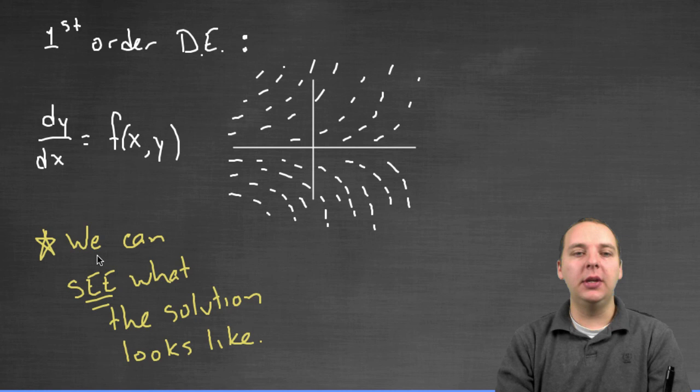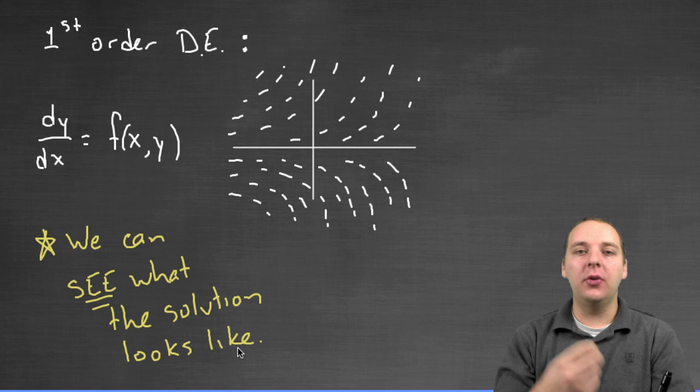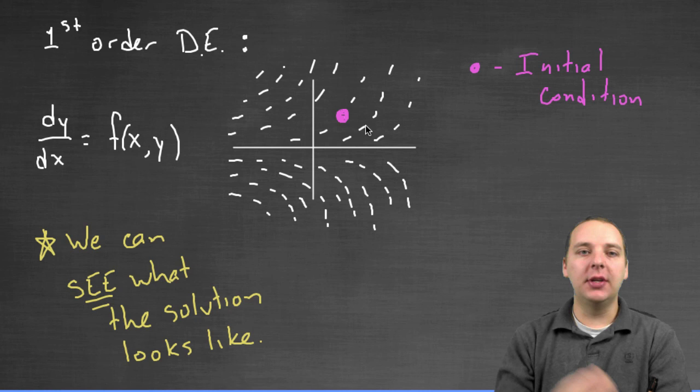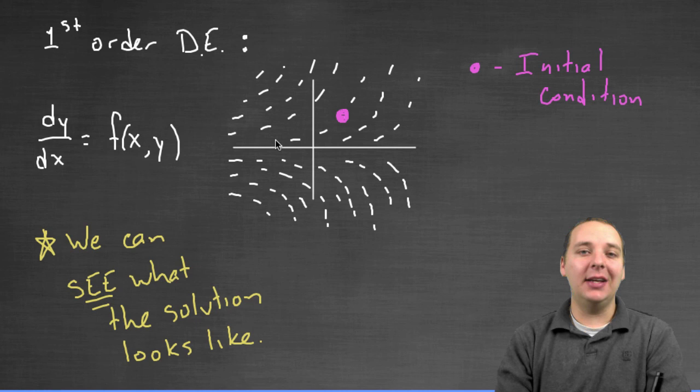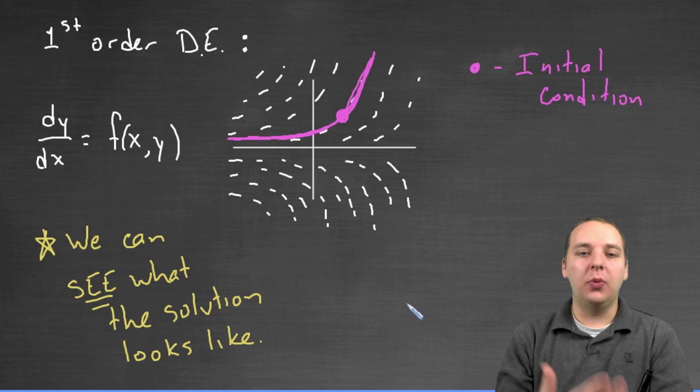Okay, so here's the key principle that we need to know. We can see what the solution looks like. We can see graphical pictures of the solution. If somebody gives us some initial condition for the differential equation, like the solution has to go through the point one one, or something like that, then given an initial condition, you can actually sketch what the solution curve would be for that differential equation. For this example, it would look something like this. Okay, so that's important to know.